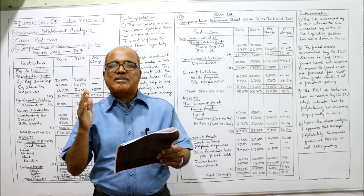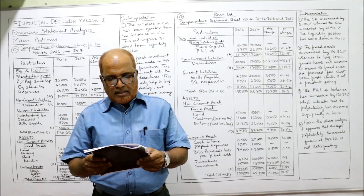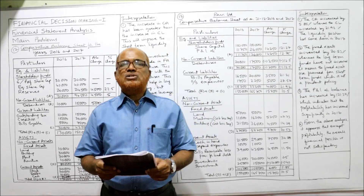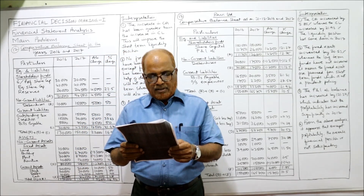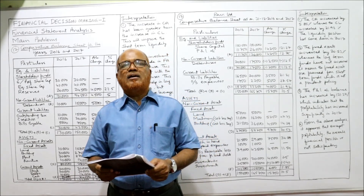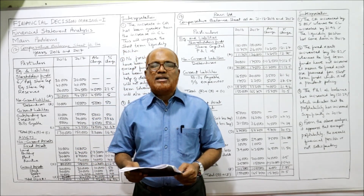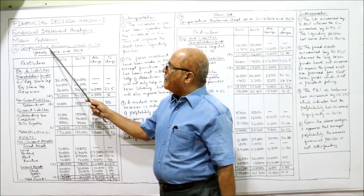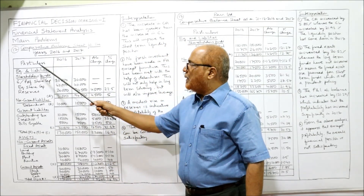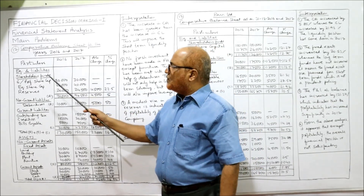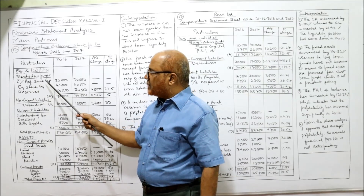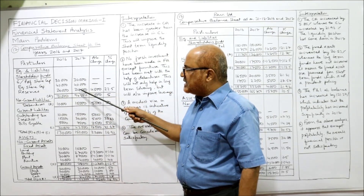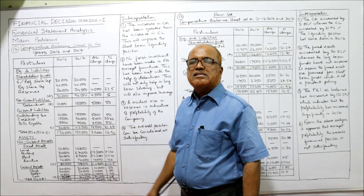Preference capital, equity share capital, and reserves — these three will be taken under shareholders' fund. Outstanding tax is a current liability, creditors and bills payable are current liabilities, and debentures will be taken under non-current liabilities. Land, building, plant, and furniture — these four will be taken under fixed assets. Stock, debtors, and cash — these three will be taken under current assets. We make the comparative balance sheet for 2016-17 with columns for particular, 2016, 2017, absolute change, and percentage change.